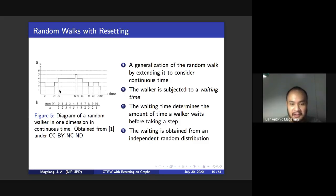So we extend this another time by considering continuous time random walks. So continuous time, this means that the walker is subjected to a waiting time. So it waits for a physical amount of time before taking a step. So this waiting time is obtained from an independent random distribution.